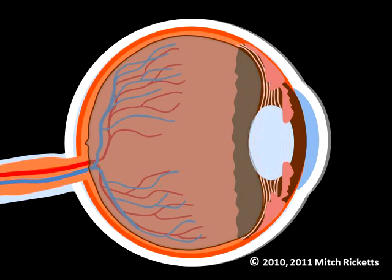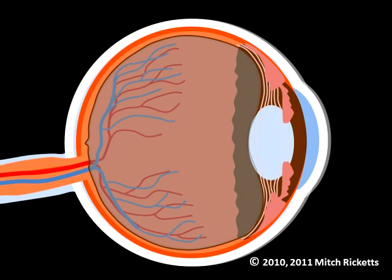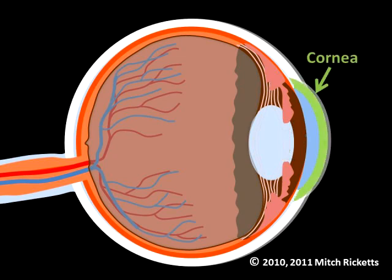This is a simplified cross section of the eyeball looking down from above. Again, the conjunctiva is the outermost protective surface. Just beneath the conjunctiva lies the tough sclera, or white of the eye. In front of the eye, positioned over the iris and pupil, is a clear, transparent bulge called the cornea. The cornea has no blood vessels, so it draws its nourishment from a clear fluid that is produced in the eye.